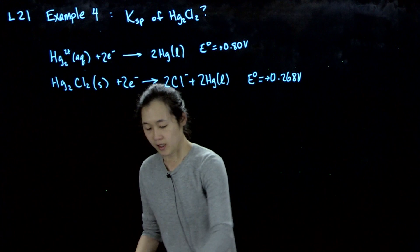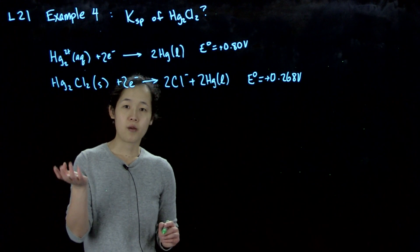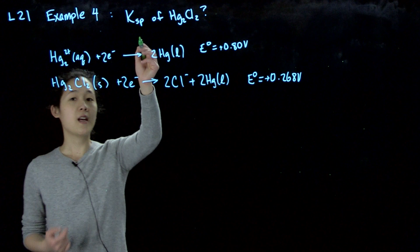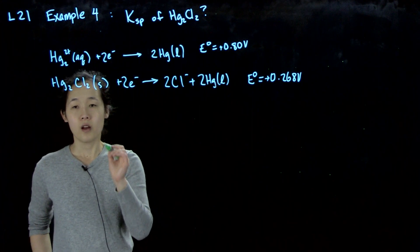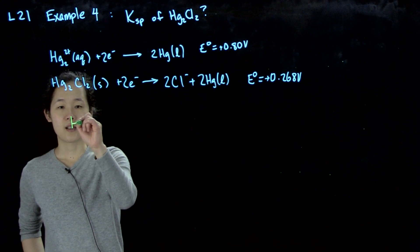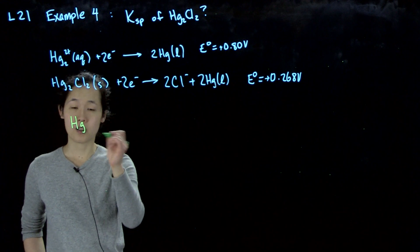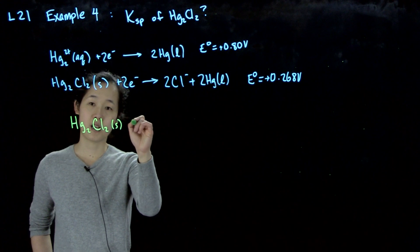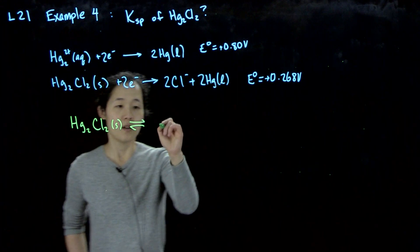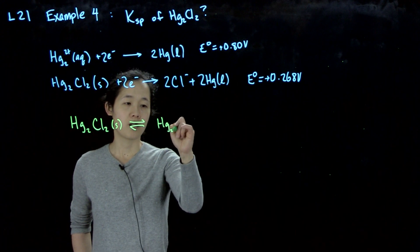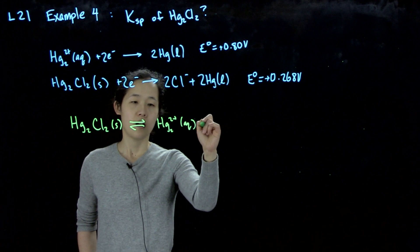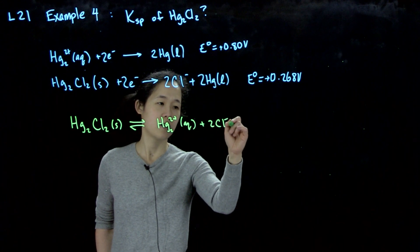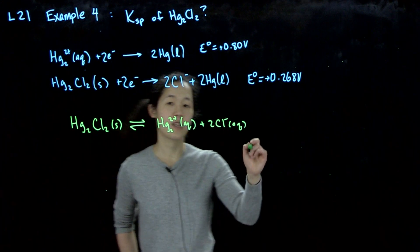Okay, so here's the answer. This is how you want to think about working it through. We know that Ksp refers to the equilibrium constant of this reaction, the dissolution of this salt. So this is in equilibrium with the mercuric ion and two chloride ions.